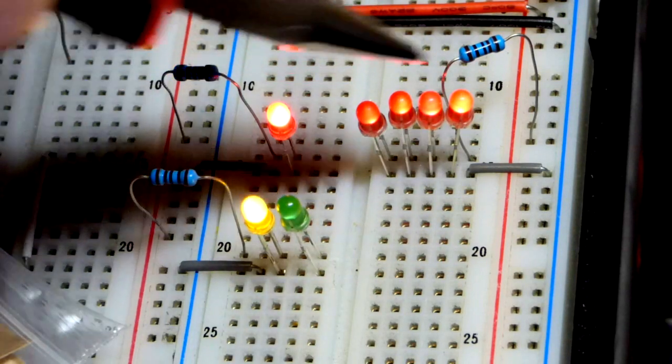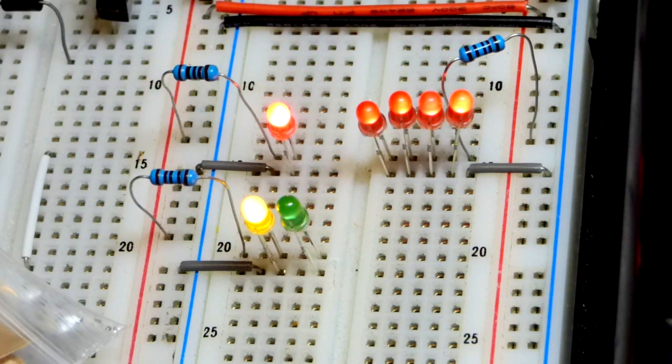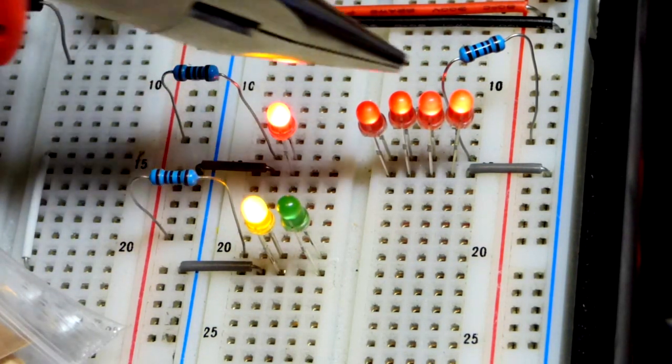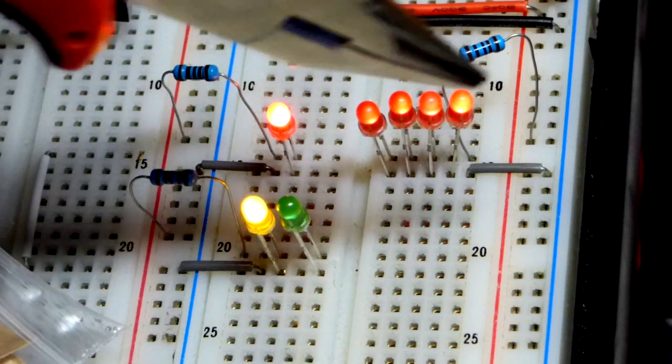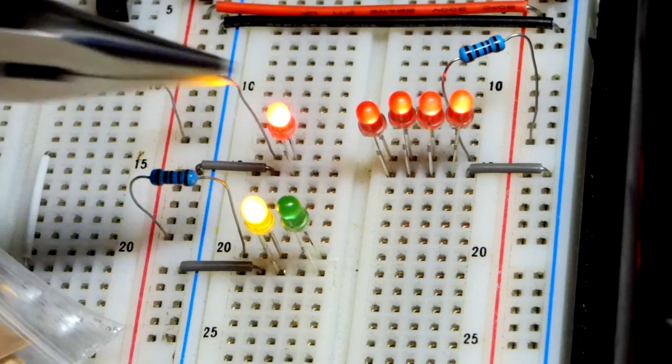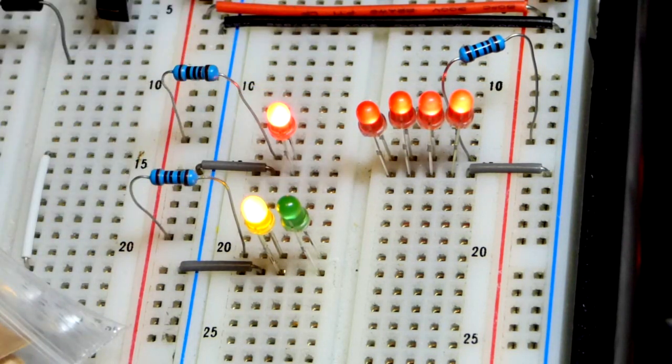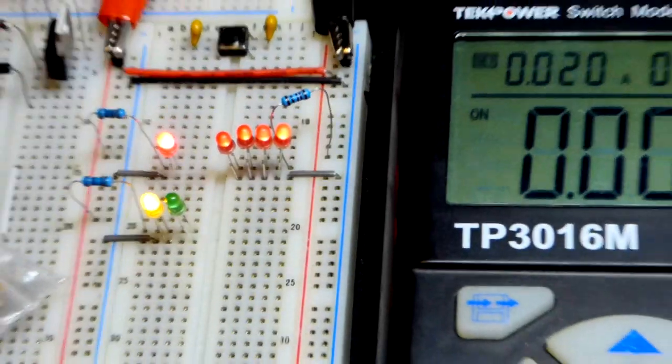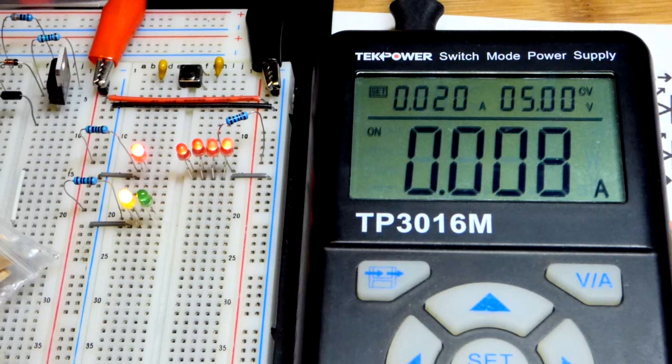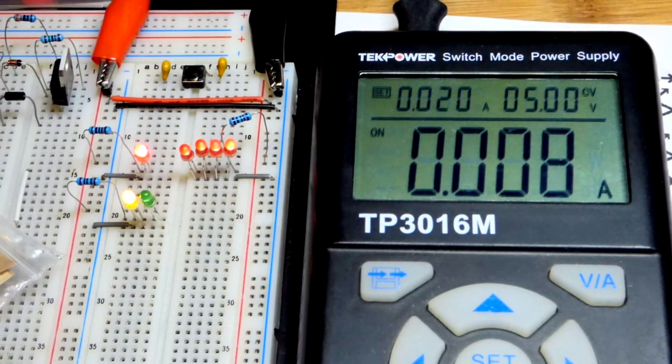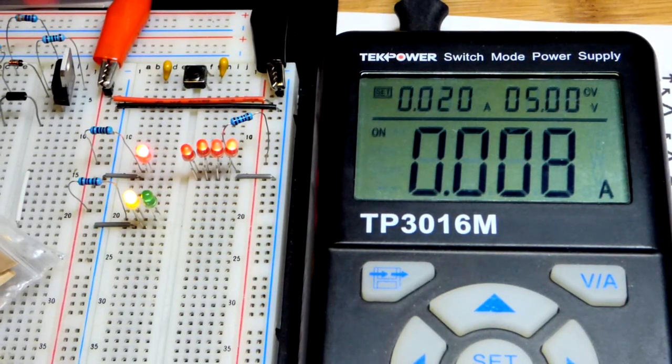These LEDs are all more dim because they're sharing the same amount of current. This one here appears to be about the same brightness as that one when they're both by themselves. These other three seem a little bit dimmer for some reason. But in any case, maybe I damaged them a little bit. But they all came from the same kit. We'll look at the power supply here.